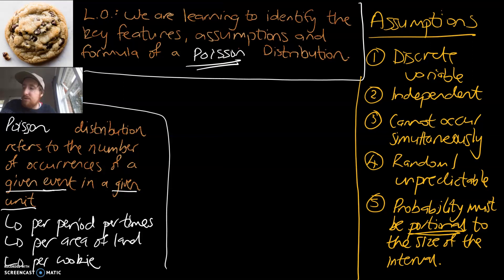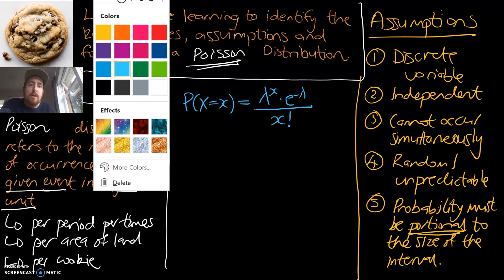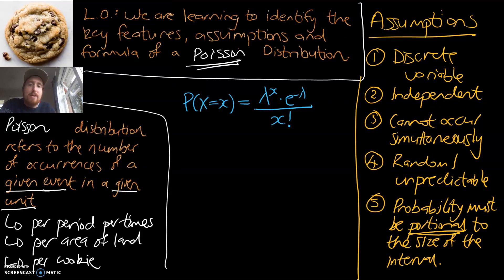I'm now going to change colors. We're into the blue pen. And I'm going to write down the formula of a Poisson distribution. So it does look messy, but I do want to emphasize the components are relatively easy to understand. And if you know how to use your graphics calculator, it will actually do most of the work for you.